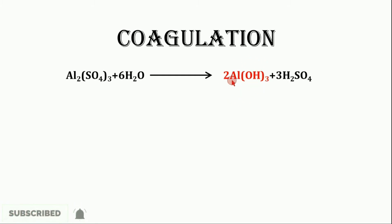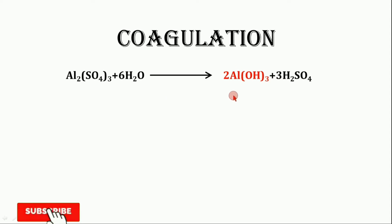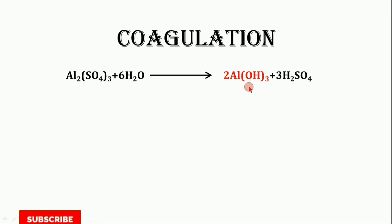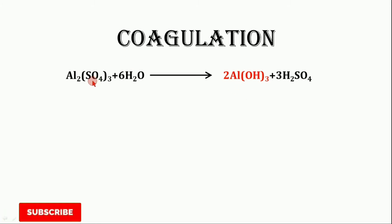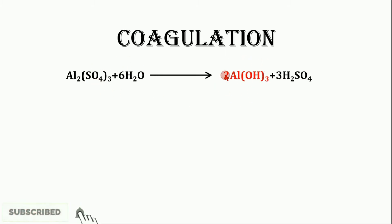The formula for alum is Al₂(SO₄)₃. When this is mixed with water, you get coagulants or precipitates — the Al(OH)₃ precipitate — which can be easily removed from the water. You can see these coagulants shown here.